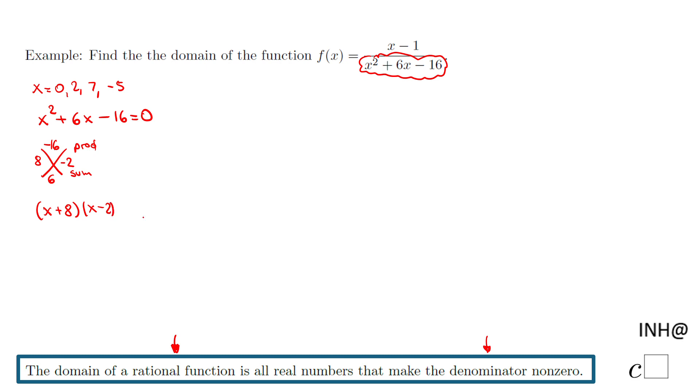This is the factored form equal to zero. Since we have a product equal to zero, we can use the zero product property - take each factor and set it equal to zero. So x + 8 = 0 gives us x = -8, and x - 2 = 0 gives us x = 2.